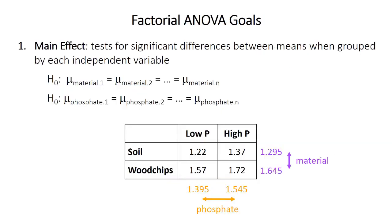What does factorial ANOVA do? The first test is for the main effects — whether there are significant differences between the means when grouped by each of the independent variables. In our example, this asks whether the mean of soil differs significantly from wood chips, and whether the low phosphate mean differs significantly from the high phosphate mean. The null hypothesis is that the group means are not different — that they come from populations with the same mean.